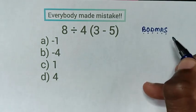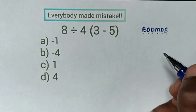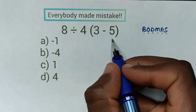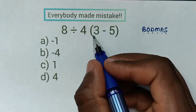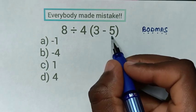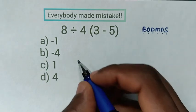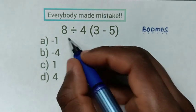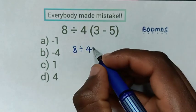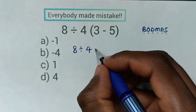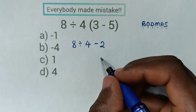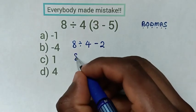First, we start to deal with what's inside the bracket: 3 minus 5 is negative 2. Then it will be 8 divided by 4, then minus 2.